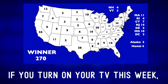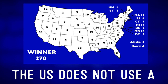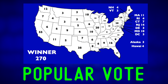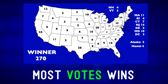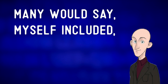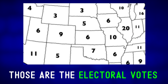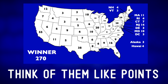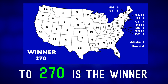If you turn on your TV this week you will see this map with states colored in two or three different colors. The US does not use a popular vote to determine the president. Popular vote is where you count every vote in the country and the person with the most votes wins. The candidate who arrives to 270 electoral votes is the winner.